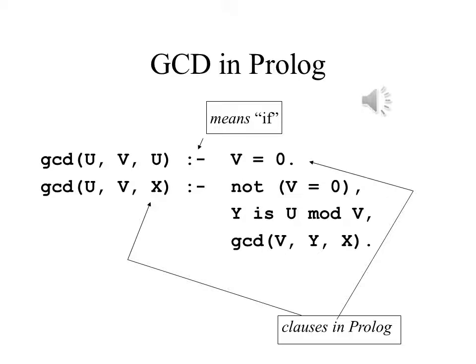There are two clauses in this version of greatest common divisor written in Prolog. It tells us that the greatest common divisor of u and v is u if v is 0. Also, it says that the greatest common divisor of u and v is x, if v is not equal to 0, if y equals u mod v, and if the greatest common divisor of v and y is x.